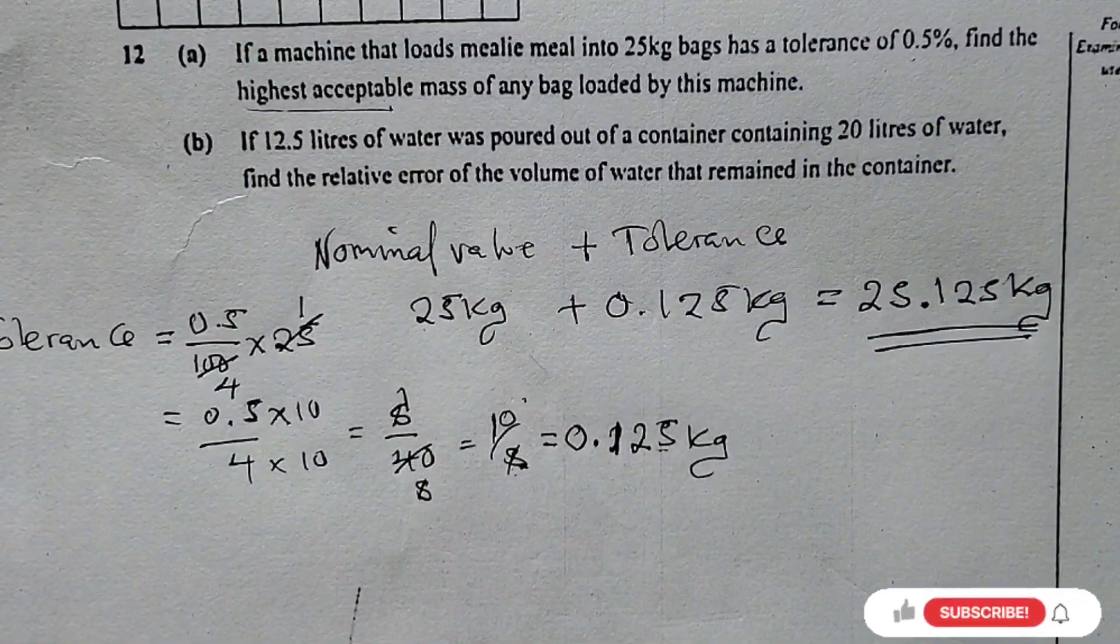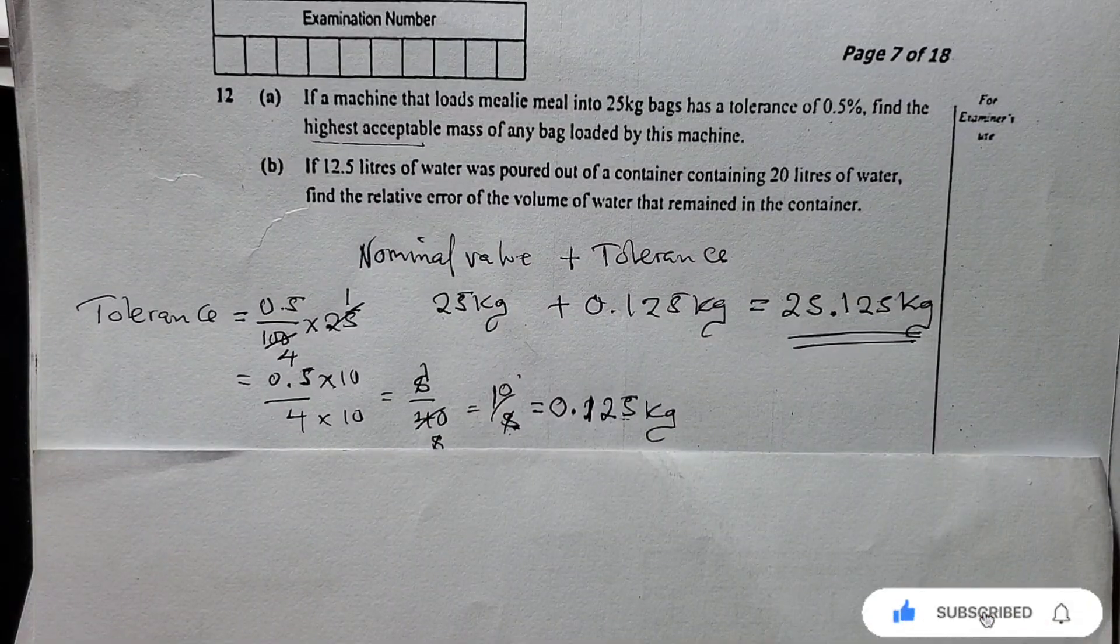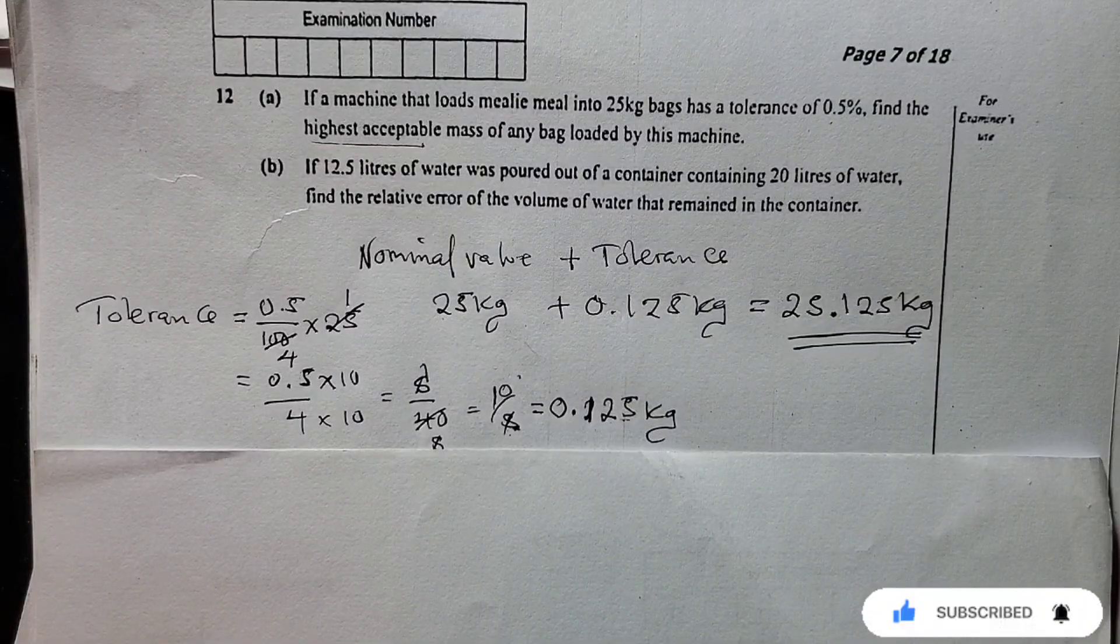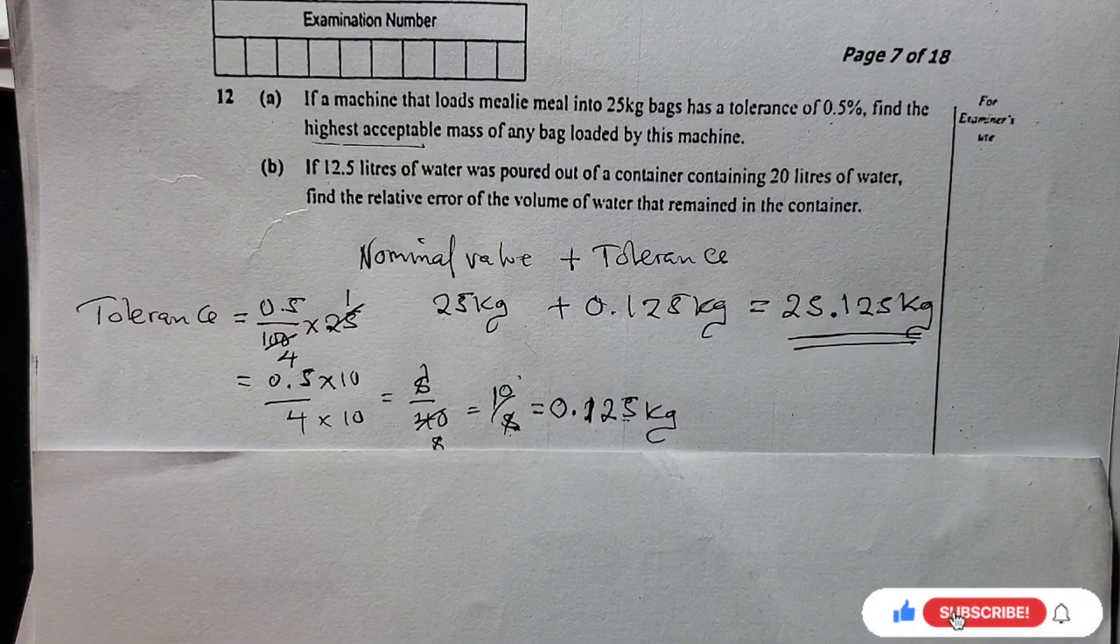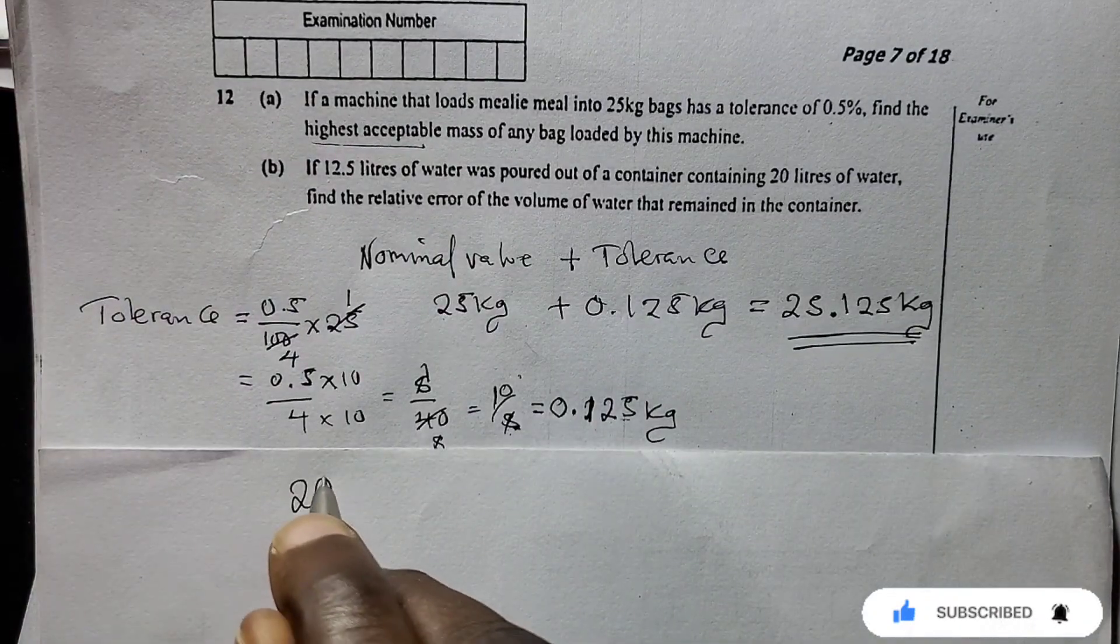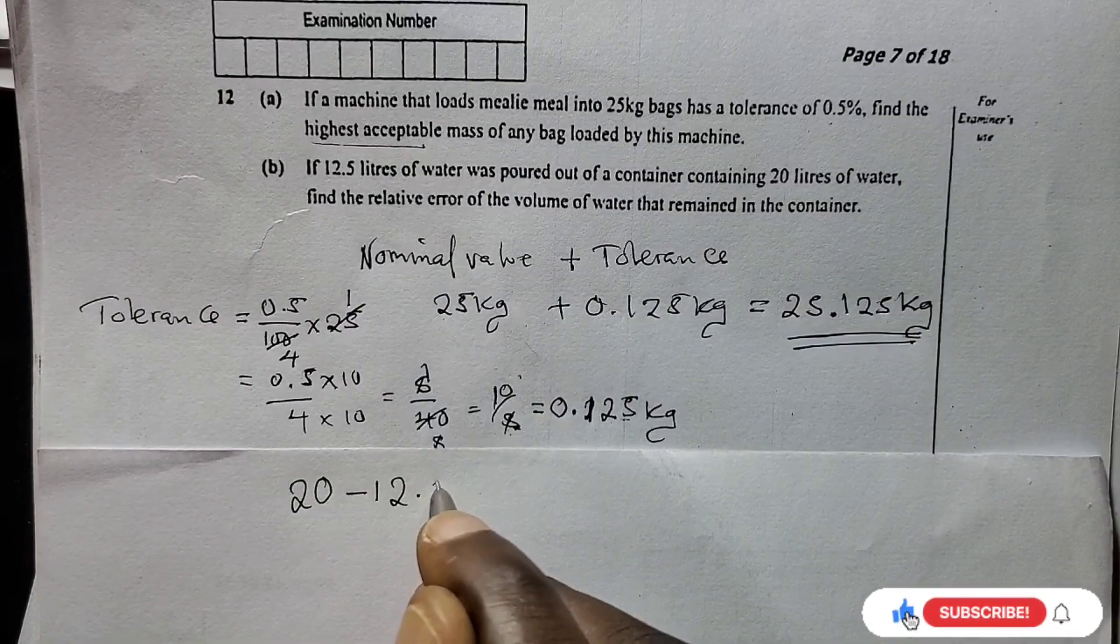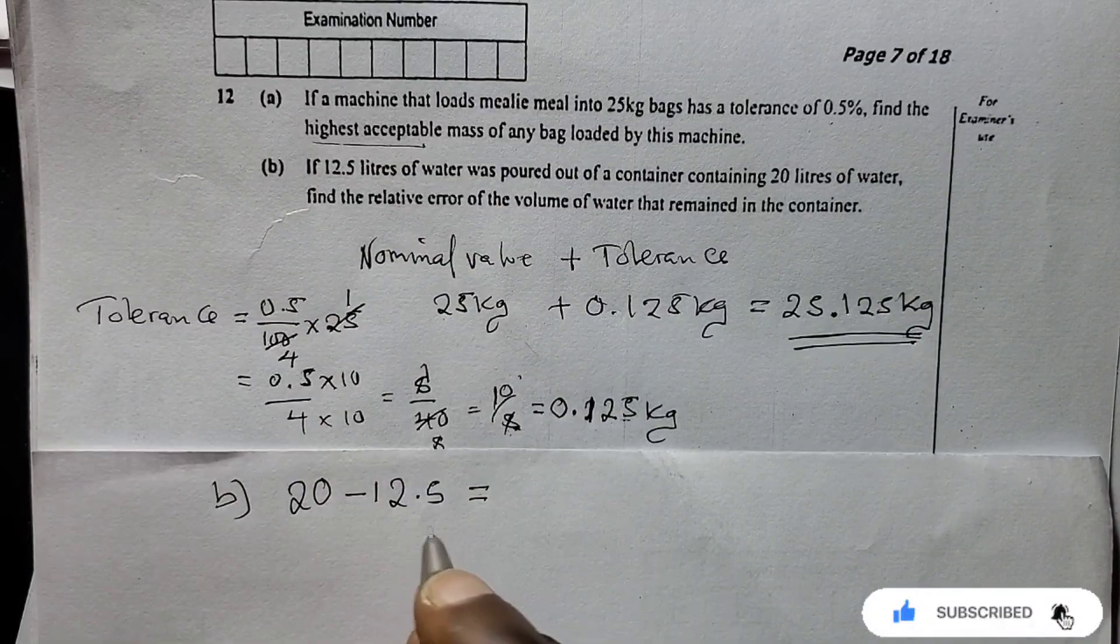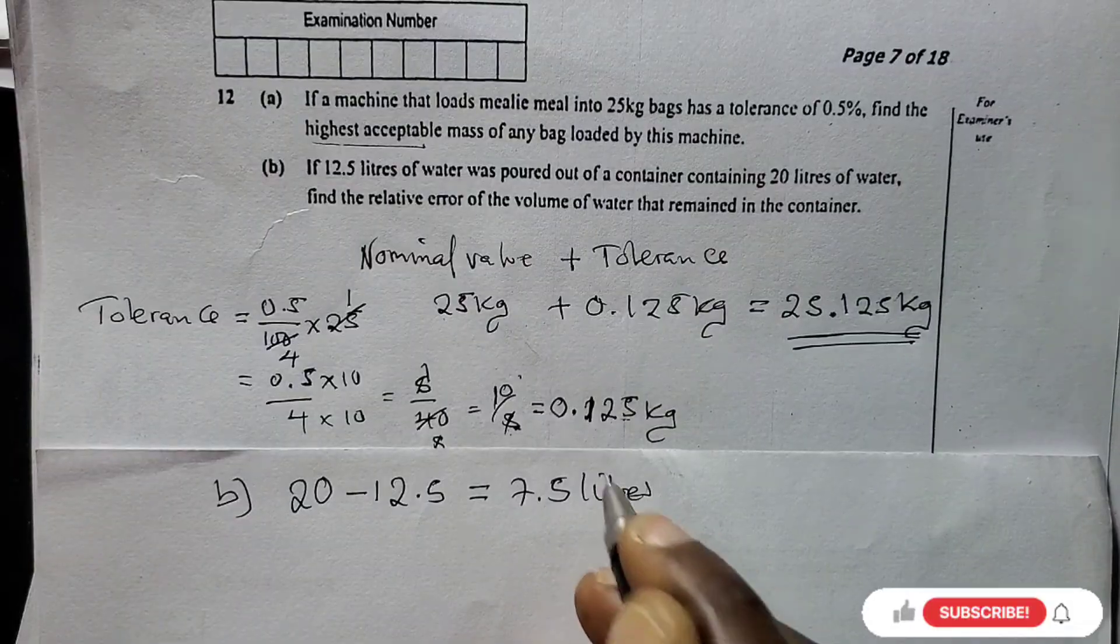The next question is saying: if 12.5 liters of water was poured out of a container containing 20 liters of water, find the relative error of the volume of water that remained in the container. Initially you had 20 liters, then you removed 12.5. So 20 minus 12.5 is 7.5 liters.